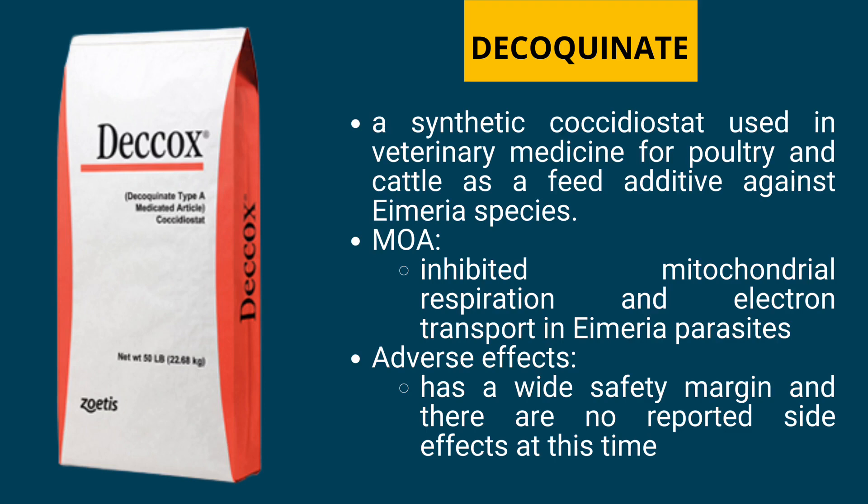Decoquinate is a synthetic coccidiostat used in veterinary medicine for poultry and cattle as a feed additive against Eimeria species. Its mode of action involves inhibiting mitochondrial respiration and electron transport in Eimeria parasites. It has a wide safety margin and there are no reported side effects at this time.